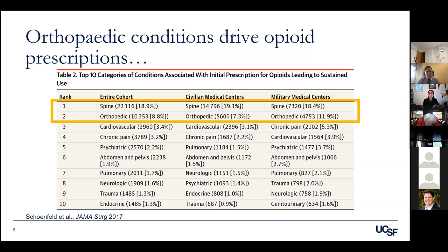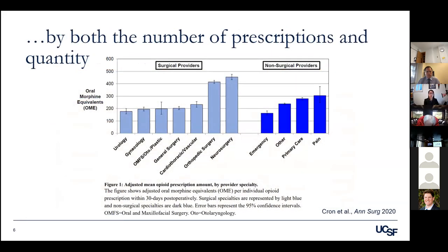Orthopedic conditions are a major driver of opioid prescriptions. Among adults insured through TRICARE — the insurance plan of the U.S. Department of Defense covering active duty and retired service members and their dependents — spine and orthopedic conditions were the number one and number two reasons for opioid prescriptions for those who were previously opioid naive. This holds true in the commercially insured population as well.